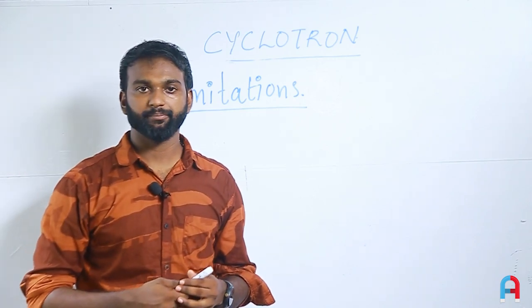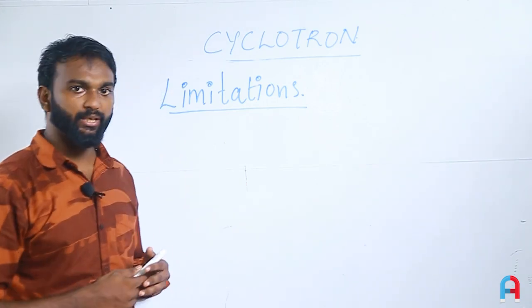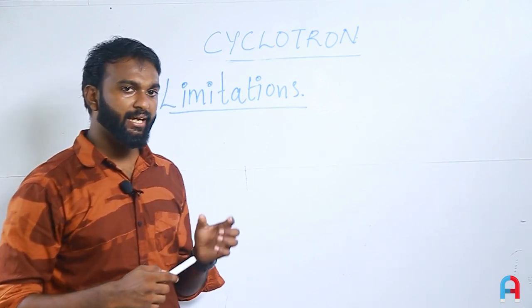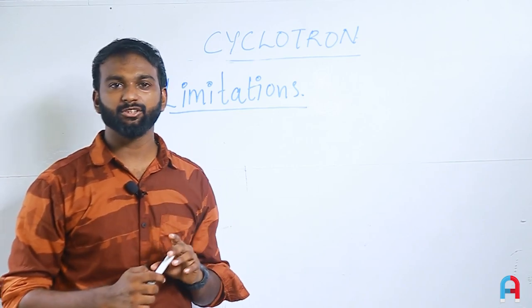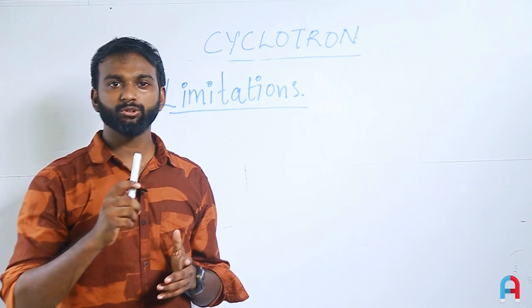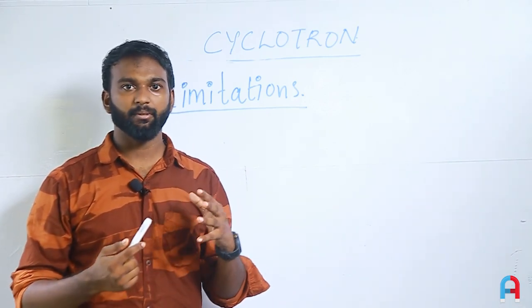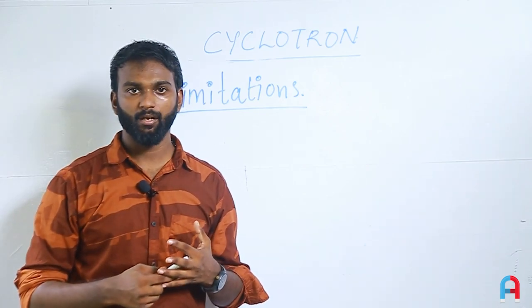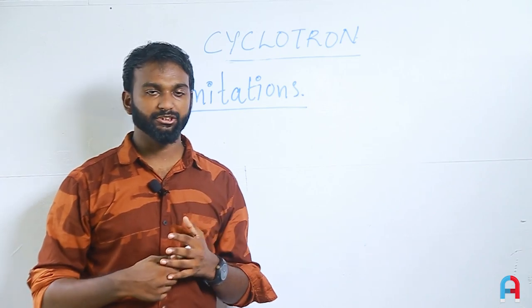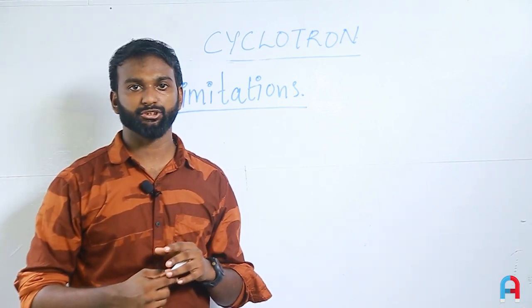Now we discuss the limitations of the cyclotron. The cyclotron cannot accelerate electrons effectively, because electrons have very small mass — they reach relativistic speeds quickly. Also, neutral particles cannot be accelerated in a cyclotron because the working principle depends on the electric force acting on charged particles.